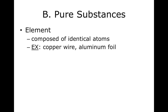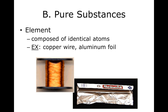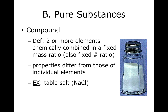Pure substances have two types: elements — there are a bunch of them on the periodic table of elements — and compounds. The definition of a compound is: two or more elements, chemically combined, in a fixed mass ratio. Later on, we'll see that a fixed mass ratio also means a fixed number ratio.